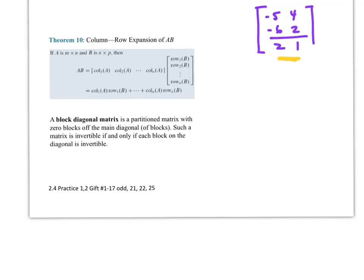Okay, now we got theorem 10, column-row expansion of AB. What these are, these are a bunch of partitions that you're dealing with. So A is M by N and B is N by P. Then we can take all the columns of A and then multiply them by all the rows of B. And then when we do that expansion, we're going to end up with this multiplication. It's each successive piece as we go along.